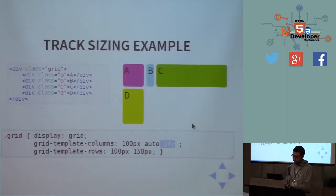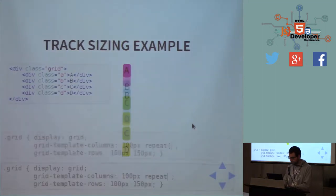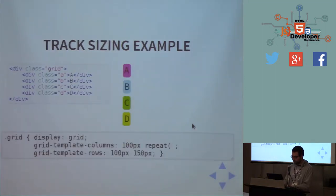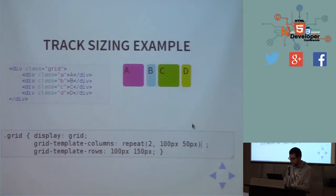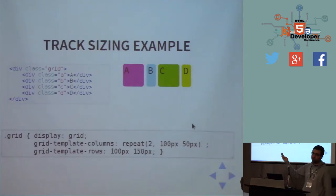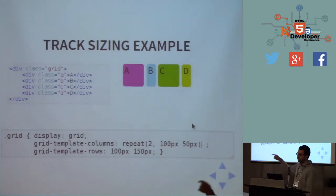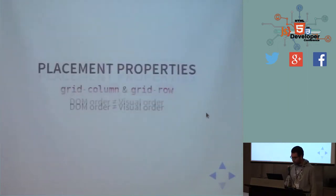We also have utility functions like `repeat()`. For example, `repeat(2, 100px 50px)` creates four columns: 100px, 50px, 100px, 50px. So you see it creates the pattern repeated the specified number of times.